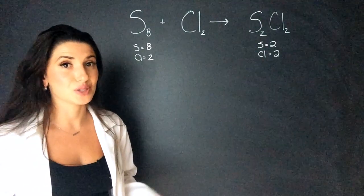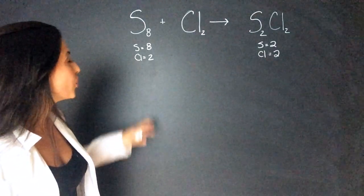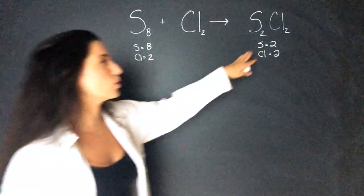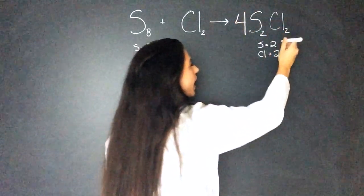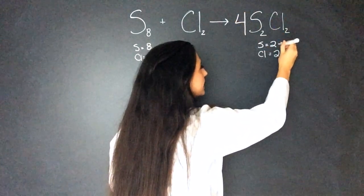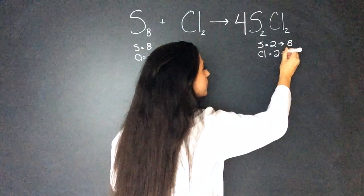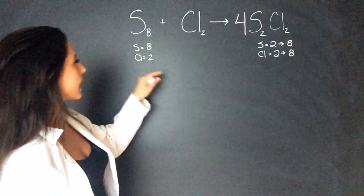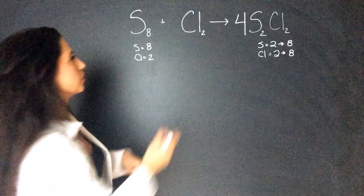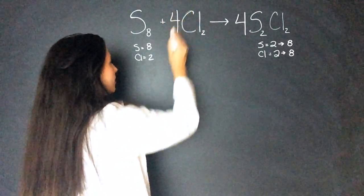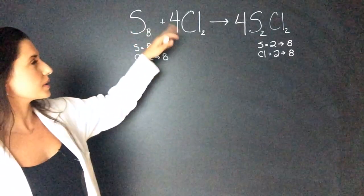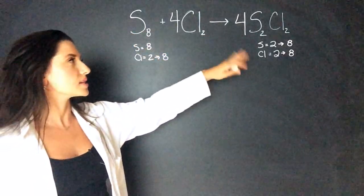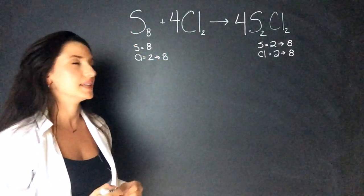So first thing we have to do is balance this equation. We have eight sulfur and only two sulfur over here. So let's put a four in front and then we will have eight here and we will have eight chlorine. So then to get chlorine over here to eight, we'll multiply it by four as well. And that will give us eight. So we have S8 plus 4Cl2 gives us 4S2Cl2.